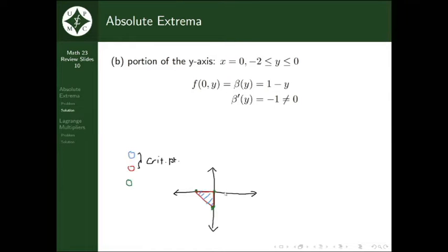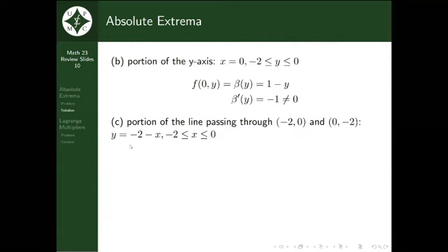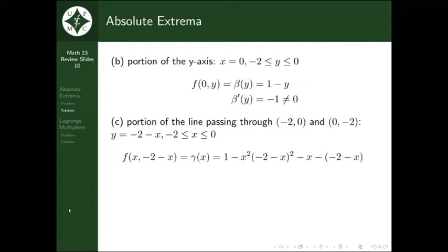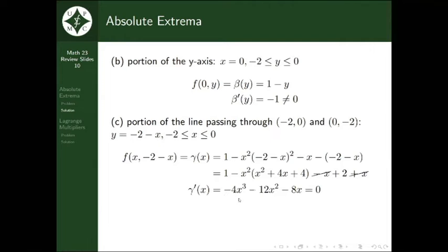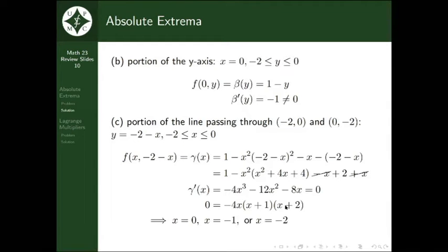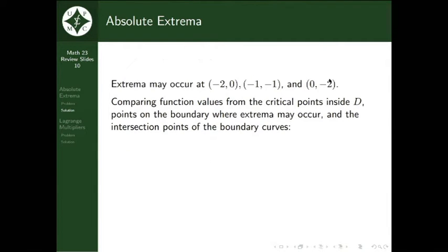What about the diagonal line? We first find its equation, then substitute y = -2 - x into f(x,y). After simplification and taking the derivative, we get critical points at x = 0, x = -1, and x = -2, all within the interval. The corresponding y-values are y = -2, y = -1, and y = 0 respectively, giving us three more critical points for a total of four.